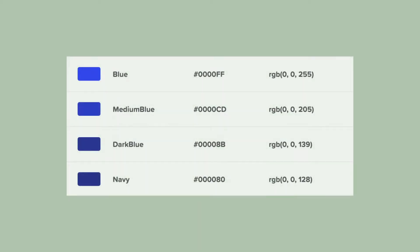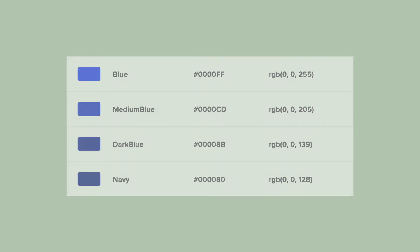There are quite a few predefined color names that are recognized by the browser. For example, something as basic as blue is recognized, or more unique blues like navy or dark blue.